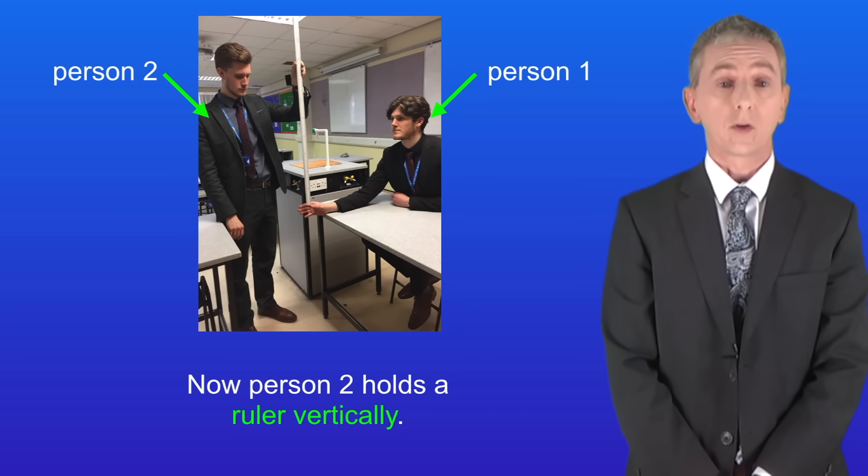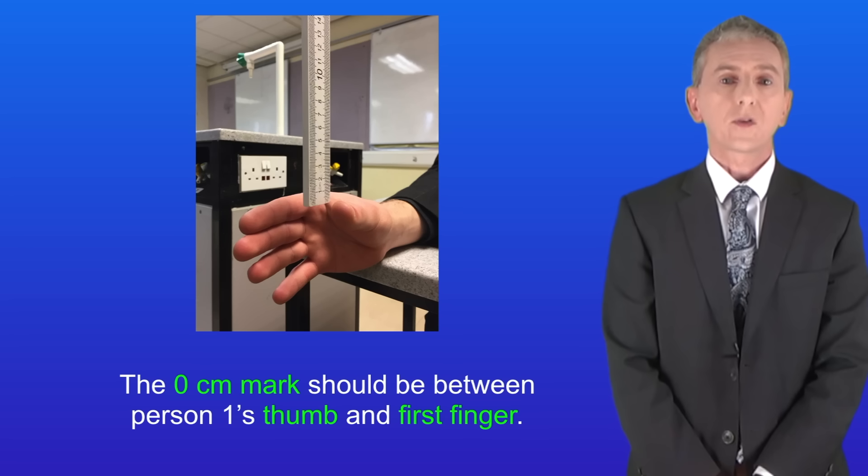Now person two holds a ruler vertically. The zero centimeter mark should be between person one's thumb and first finger.